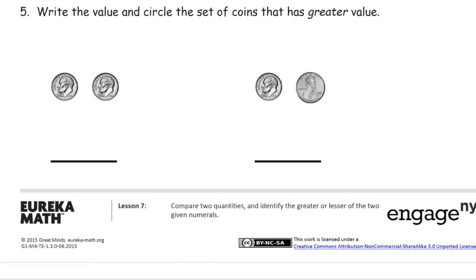Write the value and circle the set of coins that has greater value. So these are dimes, you could just write 10s here above the dimes. That's a dime, but this is a penny. So these are 2 10s, the value is 20 cents. And this is 10 and one more, so that's 11 cents. Circle the set of coins that has greater value. 20 cents is greater than 11 cents.